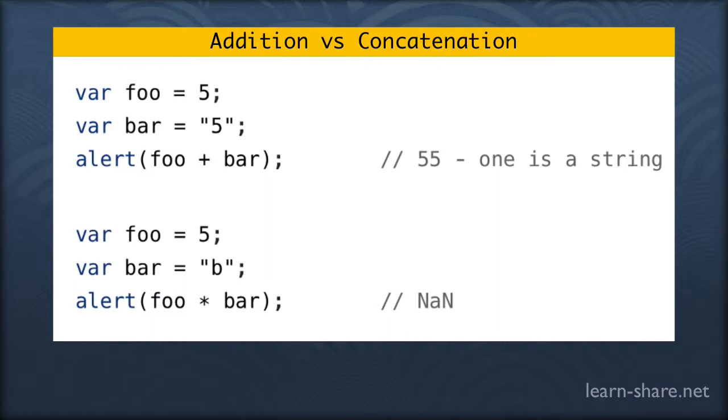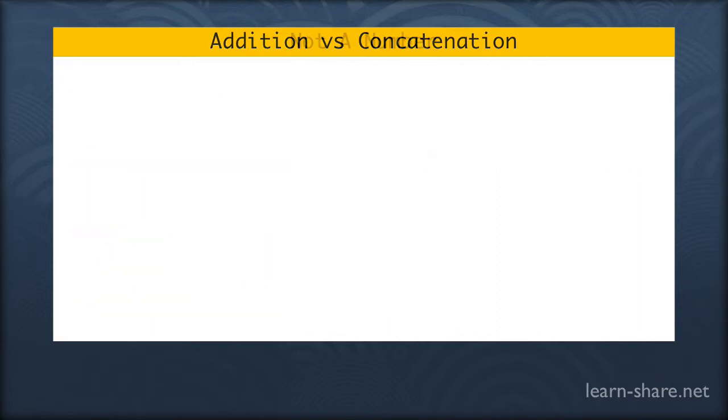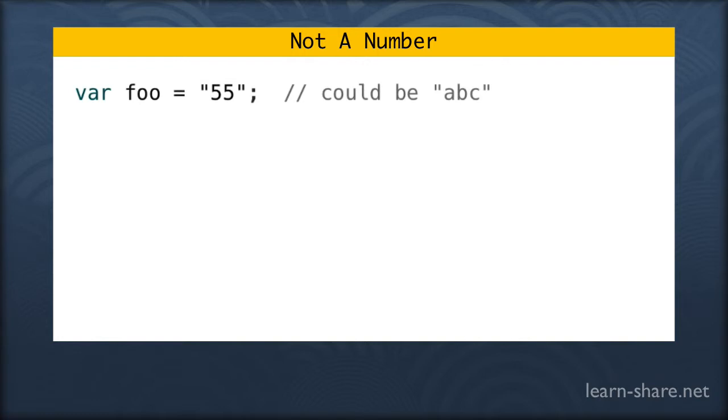And now, when we have variables that we want to be a number but they aren't. Let's say for example, we got a variable equal to a string 55. It could be a number but also could be abc or even an exclamation sign. So we hope it's a number, but it may not be.